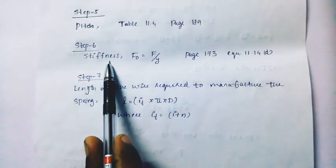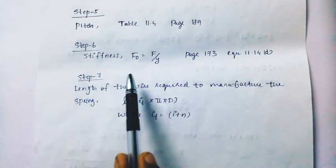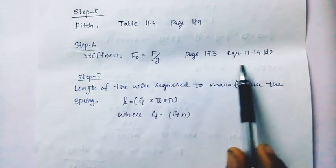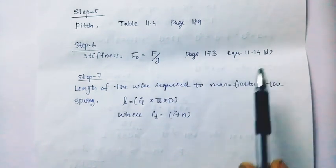Step 6 is the stiffness. F0 equals F by y. Page 173, equation 11.14d.